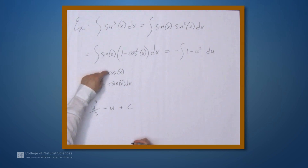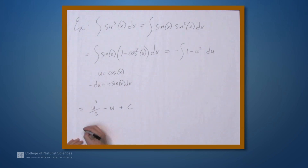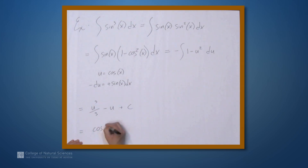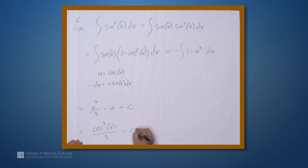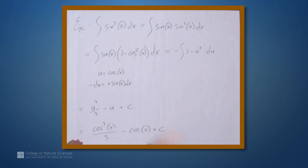Now we replace u with cosine x, giving us cos³x / 3 - cosx plus C.